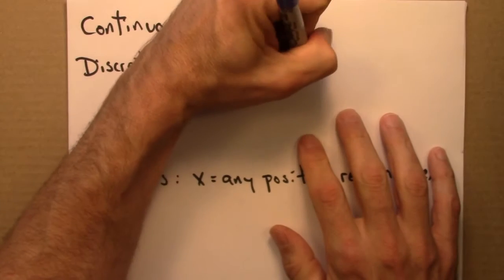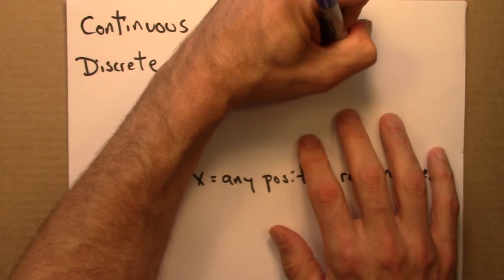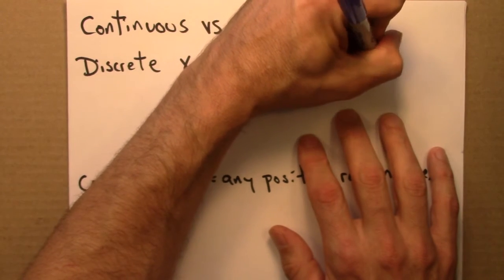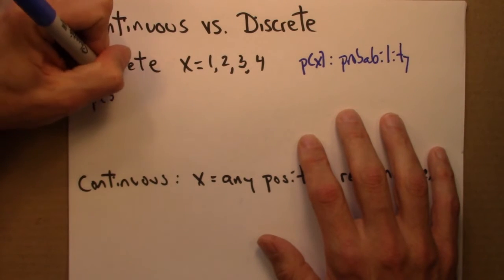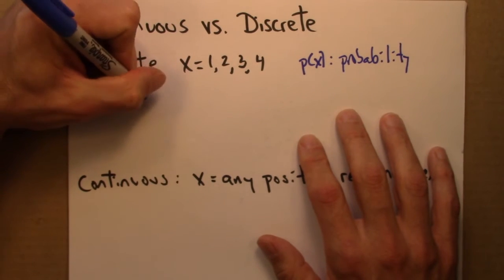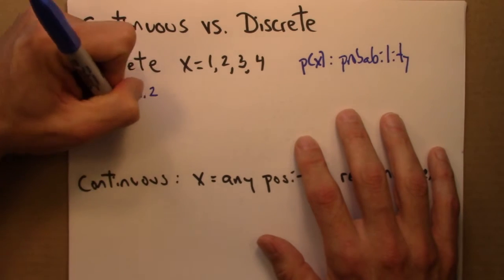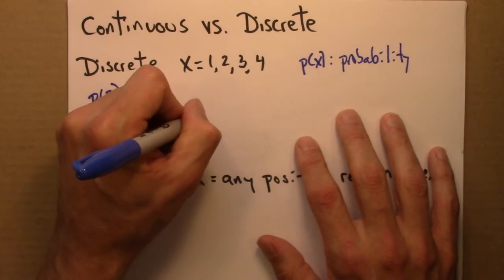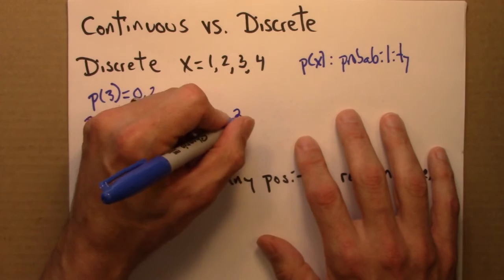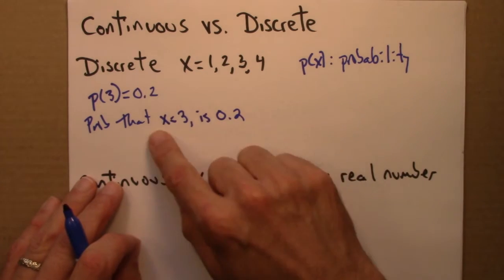So then, we might be interested in p, and that would just be probability. So for example, p of 3 equals 0.2 means probability that x equals 3 is 0.2. So there's a 20% chance that x, whatever that might be in this case, happens to be 3.